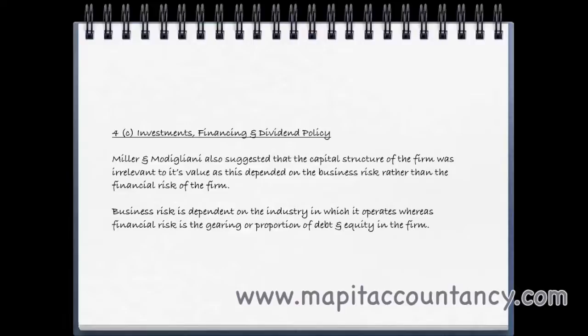Miller and Modigliani also suggested capital structure was irrelevant to the firm's value — value depends on the industry in which you operate, the business risk, not on how much debt or equity you hold. The financial risk is the gearing, the proportion of debt and equity; the business risk is the industry risk. That covers the financing side, which we'll return to in more detail once we've covered weighted average cost of capital. Hopefully the linkage between investments, financing and dividend policy will become even clearer as we refresh our memory and move through all areas of the course.